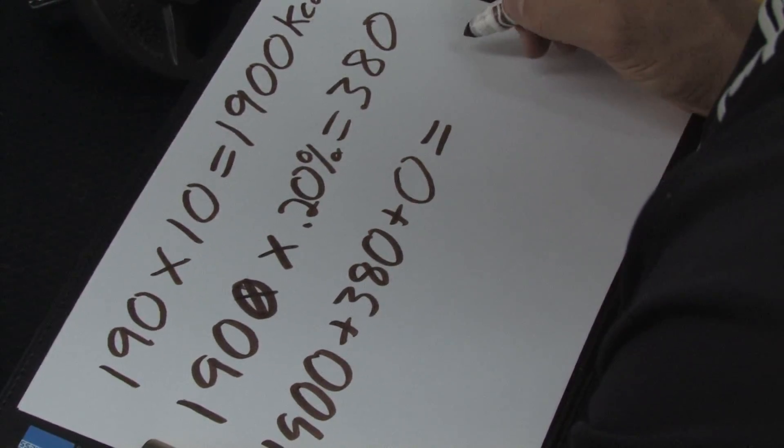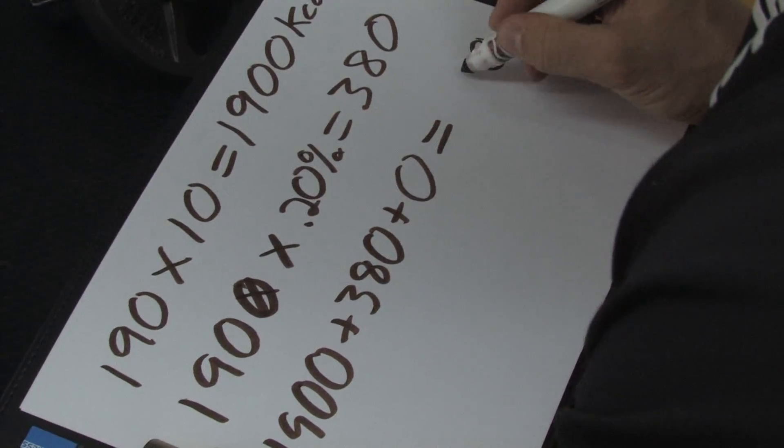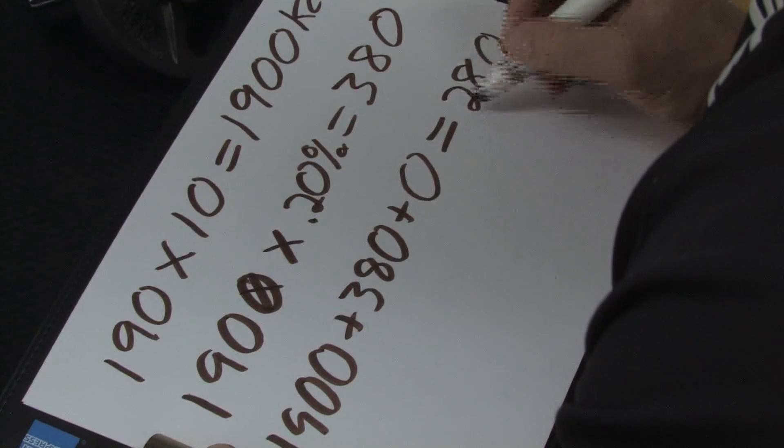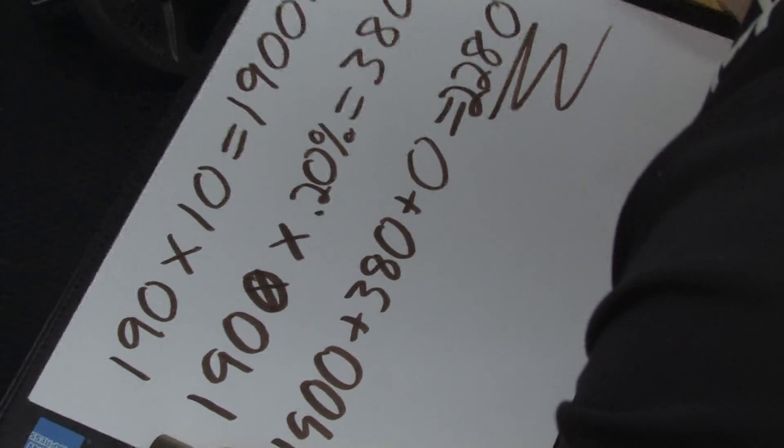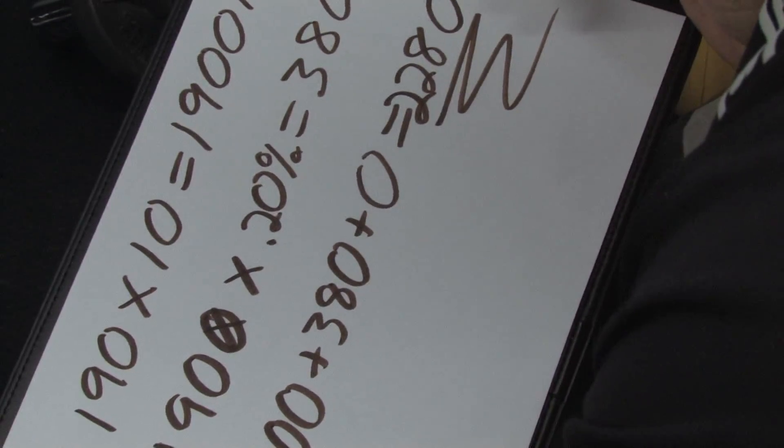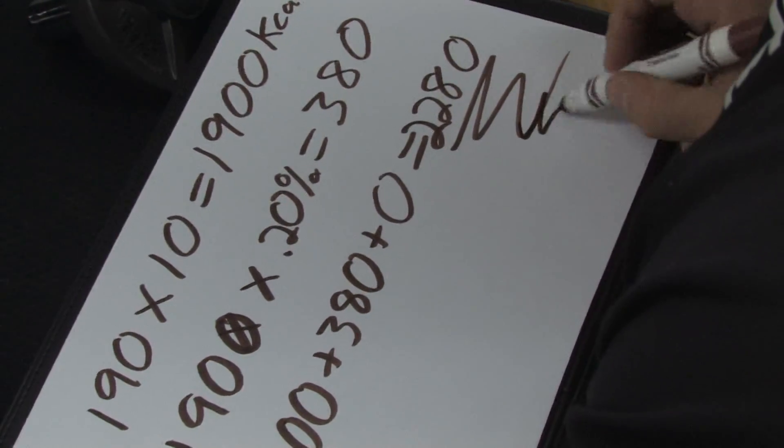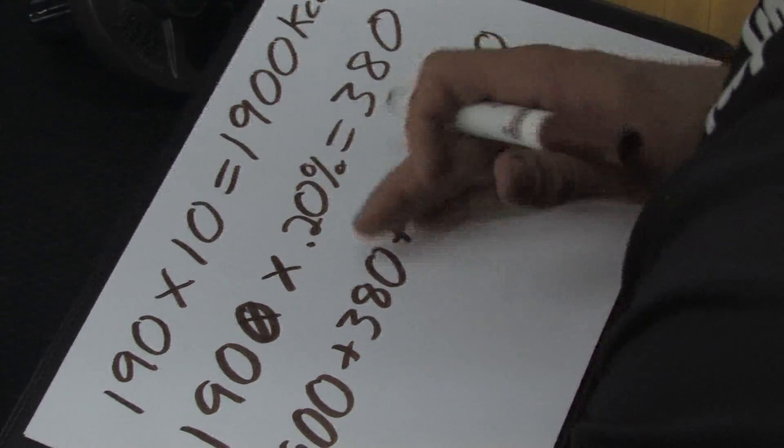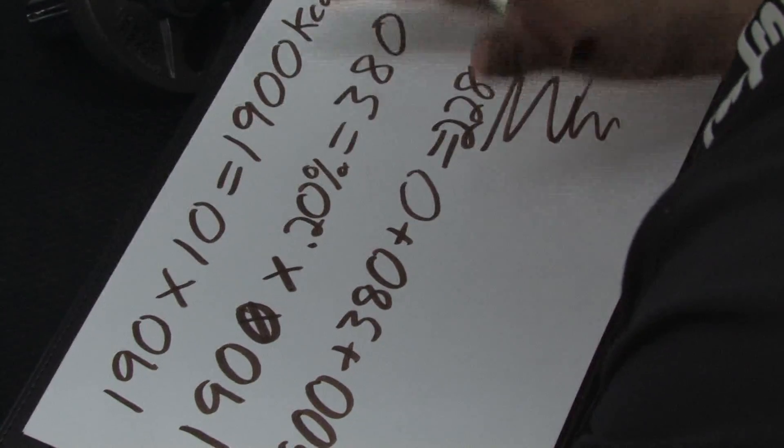So we're going to figure this out. So my basal metabolic rate would be 2280. That's the number of calories I'm looking to either eat a little less than or eat more than if I'm looking to gain or lose weight.